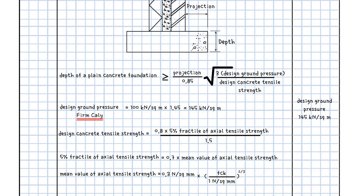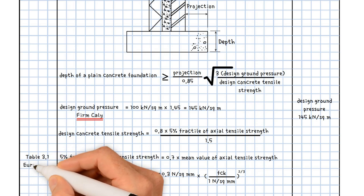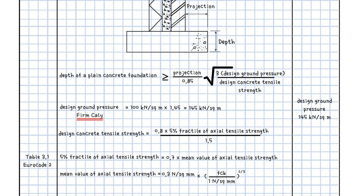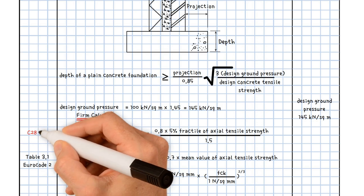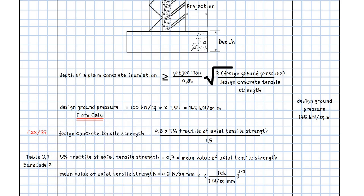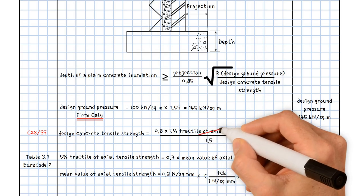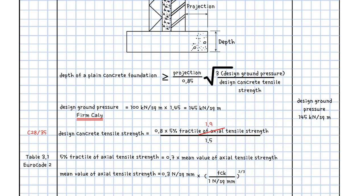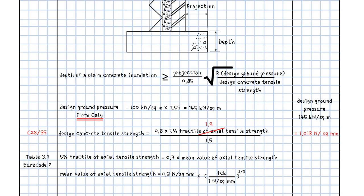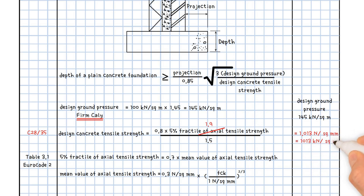You can also find the value of the 5% fractile of axial tensile strength in Table 3.1 of Eurocode 2. For concrete strength class C28/35, the design value of concrete tensile strength equals 0.8 times 1.9, divided by 1.5. This gives a value of 1.013 N/mm², which also equals 1013 kN/m².